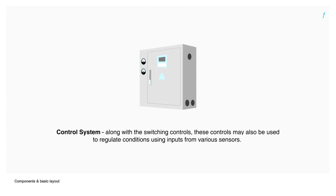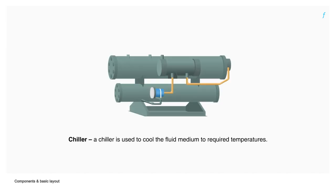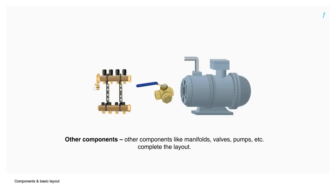Control system: Along with the switching controls, these controls may also be used to regulate conditions using inputs from various sensors. Chiller: A chiller is used to cool the fluid medium to required temperatures. Other components like manifolds, valves, pumps, etc., complete the layout.